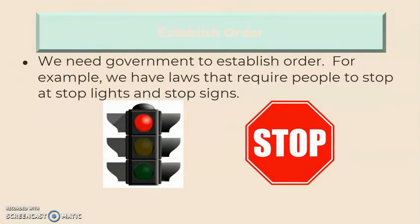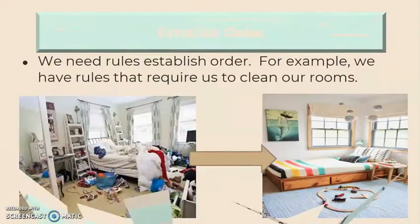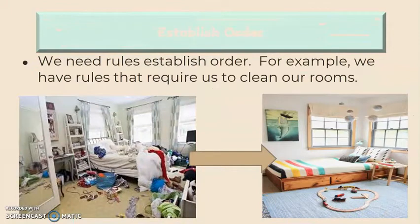We need government to establish order. For example, we have laws that require people to stop at stoplights and stop signs. We also need rules that establish order. For example, we have rules that require us to clean our room.